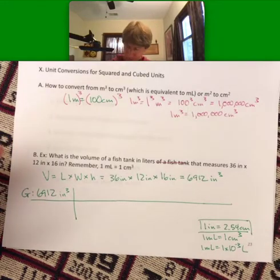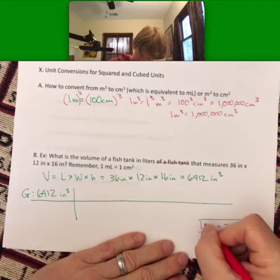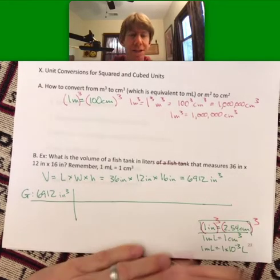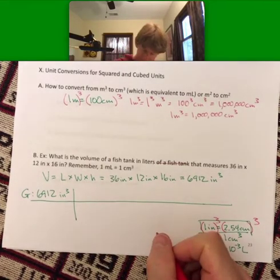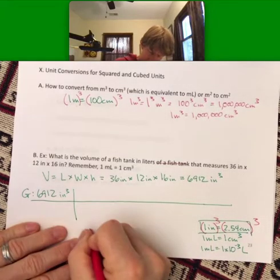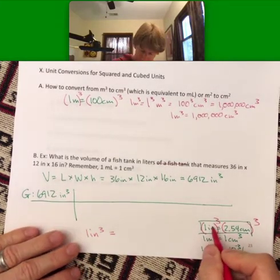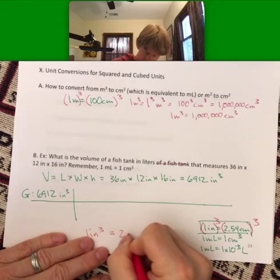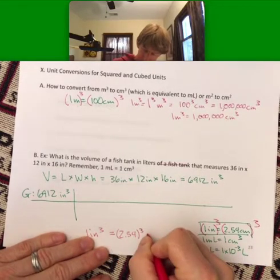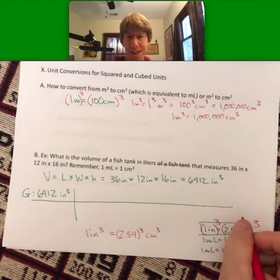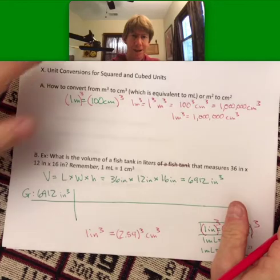Cube both sides and I get that one inch cubed, because one cubed is still one, equals 2.54 cubed centimeters cubed. And that's the set of units that we need that are going to be the hardest to come by here.